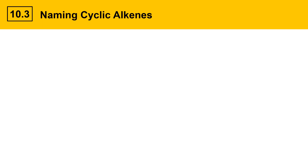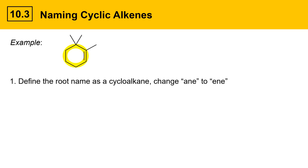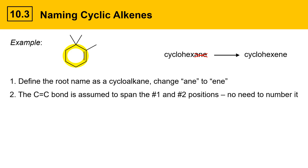Naming cyclic alkenes is described on this slide. This molecule contains a ring with some groups attached, but the ring is the major piece — it has the most carbons, so it defines the root name. In molecules like this you define the root name as a cycloalkane but change the -ane ending to -ene. If this were an alkane it would be cyclohexane; we remove the -ane ending and replace it with -ene to get cyclohexene. The C=C double bond is assumed to span the number one and number two positions in a cycloalkene, and there's no need to number it.